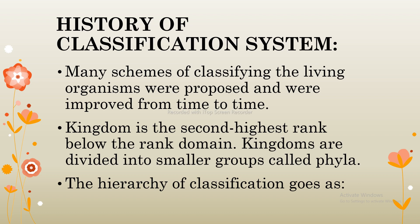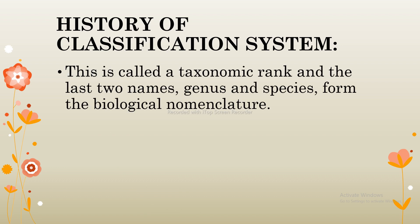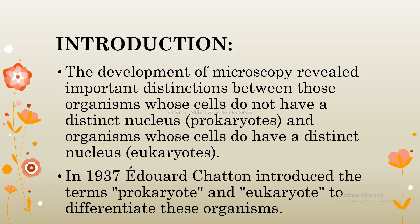First of all, I will discuss the history of the classification system. Many schemes of classifying living organisms were proposed and improved from time to time. Kingdom is the second highest rank below the rank of domain. Kingdoms are divided into smaller groups called phyla. The hierarchy of classification goes as: domain, kingdom, phylum, class, order, family, genus, and species. This is called the taxonomic rank, and the last two names — genus and species — form the biological nomenclature.